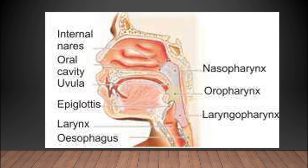During swallowing, when we eat food or drink water, the larynx moves upward and the epiglottis covers the opening of the larynx, so that food or water passes into the oesophagus. When swallowing is complete, the larynx returns to its upper position and the epiglottis uncovers the larynx. The opening of the larynx is also known as the glottis.